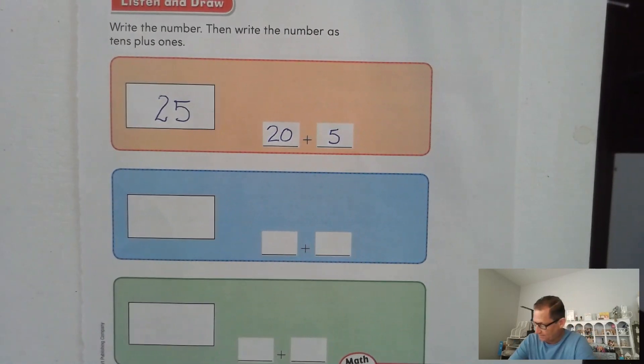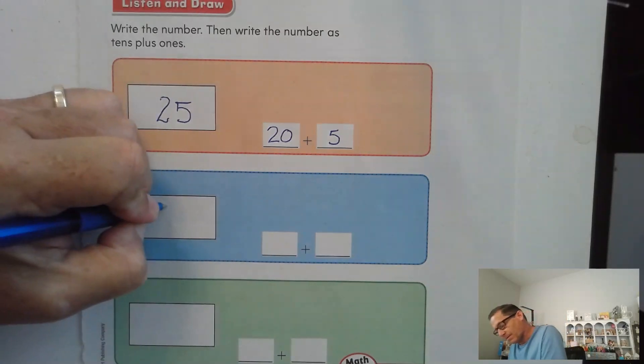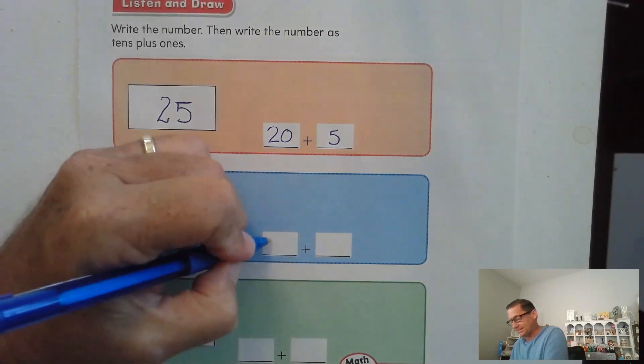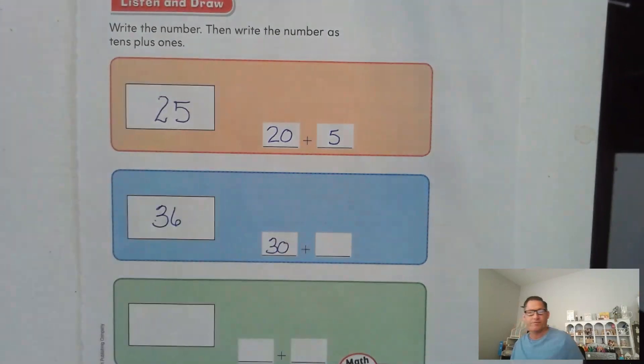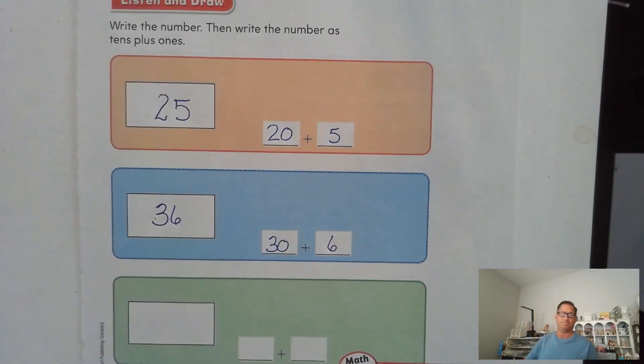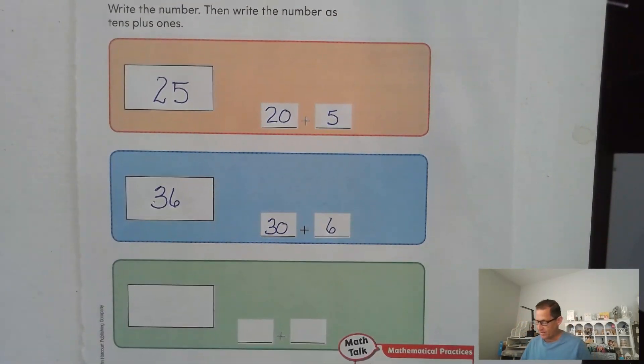So in the second one, write the number 36 in the large rectangle, and then write it as a sum of tens and ones. 36. We know there are three tens and three tens have a value of 30. And then there are six ones.